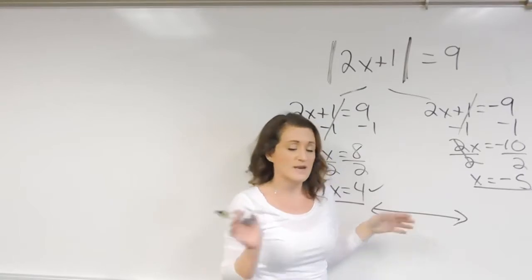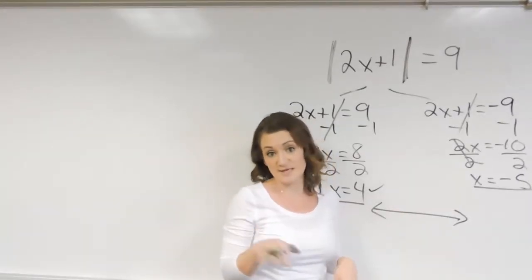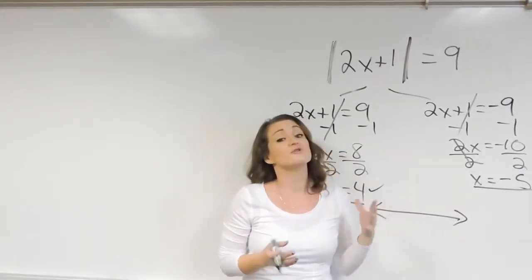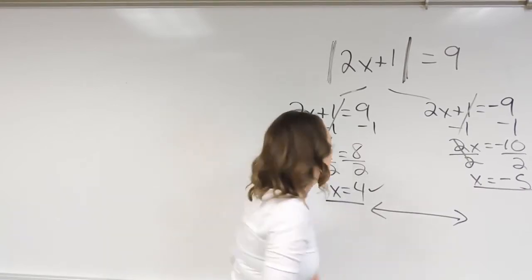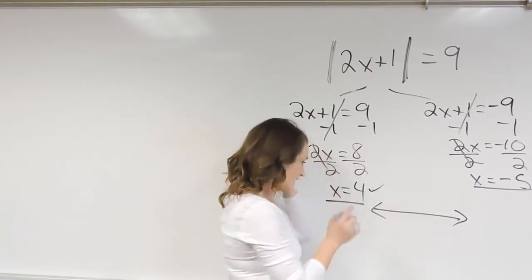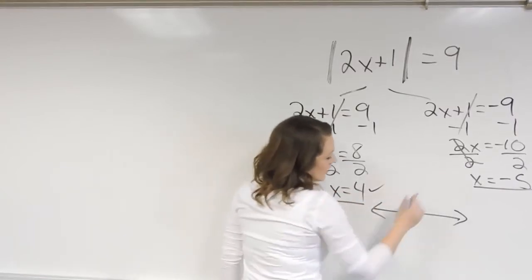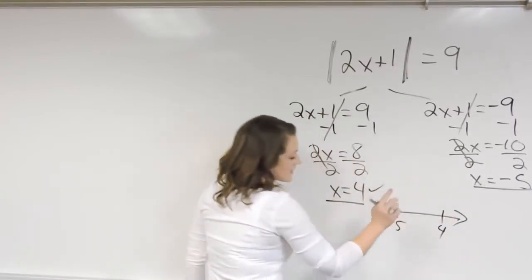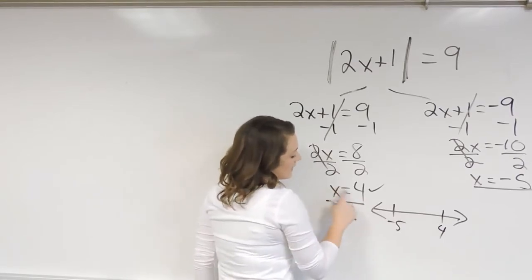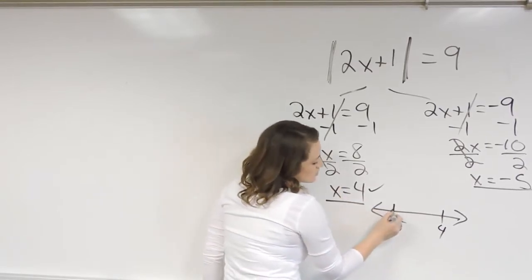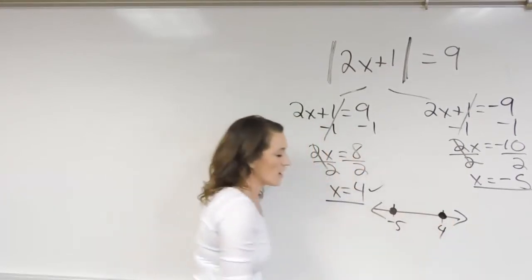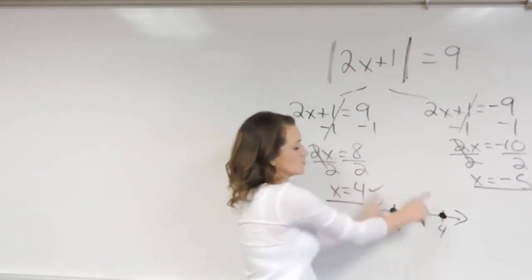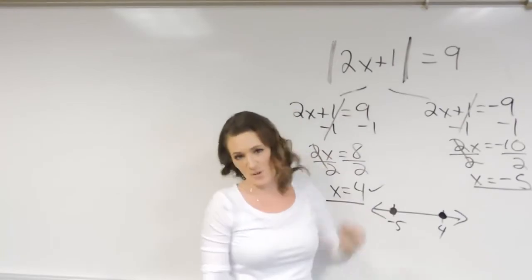And most of the time they will, but every once in a while you do have one that turns out not to be. So you do need to get in the habit of checking your solutions every time. Otherwise, when we go to graph these, so x equals 4, it also equals negative 5. So here's 4 and negative 5. Now this is equals, so equals is just a dot on it, so a dot on negative 5, a dot on 4. So these are the two solutions that these represent here.